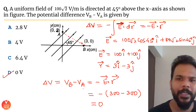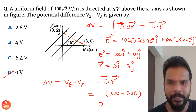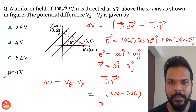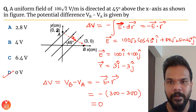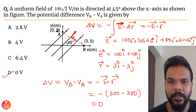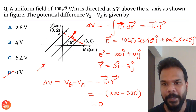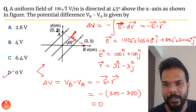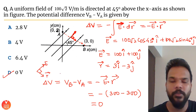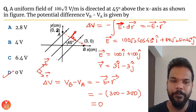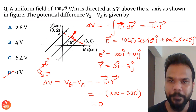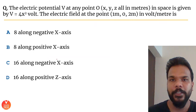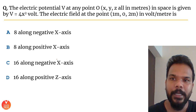The reason there is no potential difference — and no work done — is that the electric field vector and the displacement vector are perpendicular to each other in this configuration.